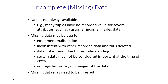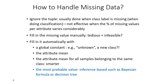Missing data may not be inferable or may need to be inferred depending on our requirement. How do we handle missing data? First, we can ignore the tuple — this is usually done when the class label is missing during classification. Ignoring the tuple means simply not including it in computation — treating it as if it doesn't exist.